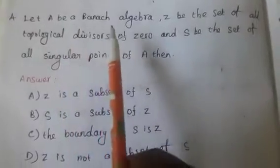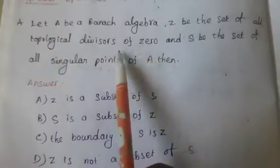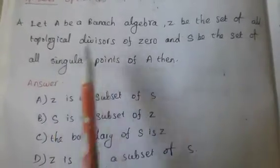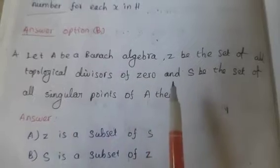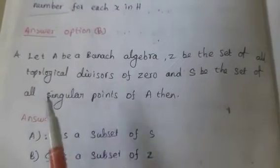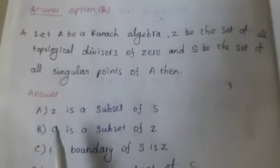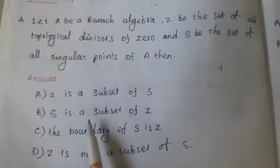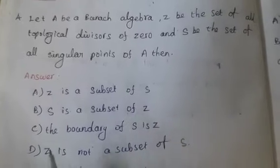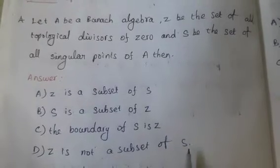Fourth question: Let A be a Banach algebra, Z be the set of all topological divisors of 0, and S be the set of all singular points of A. Then — Option A, Z is a subset of S; Option B, S is a subset of Z; Option C, the boundary of S is Z; Option D, Z is not a subset of S.